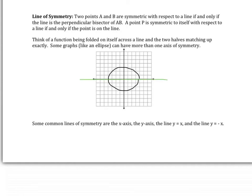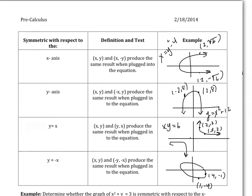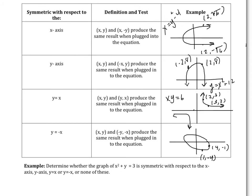For example, an ellipse folded across the X-axis will still fold onto itself and match up perfectly; it can also be folded on the Y-axis. There can be more than one line of symmetry. In the chart: for X-axis symmetry, the points (x, y) and (x, −y) produce the same results. Looking at this function, the points (2, √6) and (2, −√6) show that making the Y-value negative folds the graph onto itself.